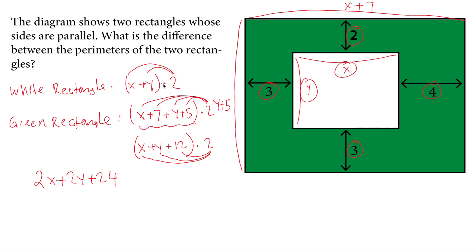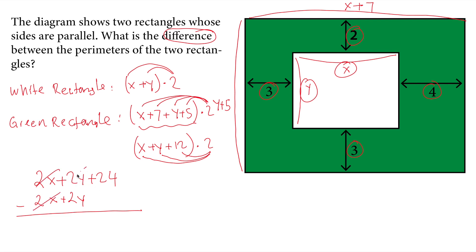The small rectangle's perimeter is 2x plus 2y. When we subtract that from the big rectangle's perimeter to find the difference, 2x and 2y are eliminated, so our result is 24.